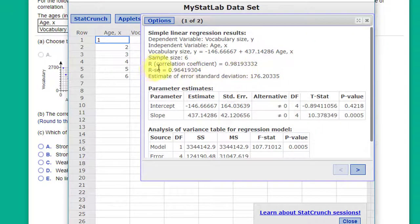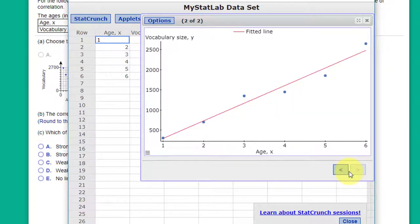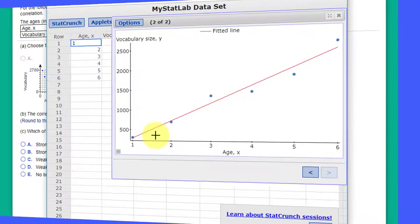We get our correlation coefficient in this case 0.9819 which would round to 0.982 for just three decimal places. And we also get our scatter plot that shows the line goes up and to the right which would be a strong positive correlation.